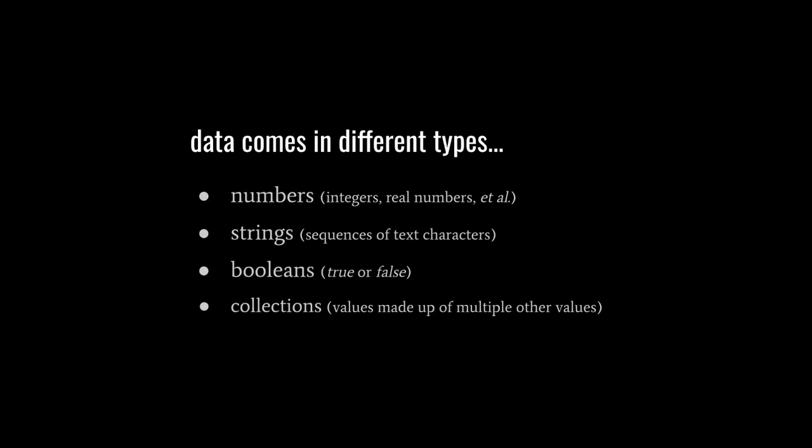Now data can come in many different kinds, but the essential kinds are numbers, strings, booleans, and collections. Numbers require no explanation, but a string is a piece of text, a sequence of text characters, and a boolean is a value that's simply just true or false, used to represent yes-no pieces of data.